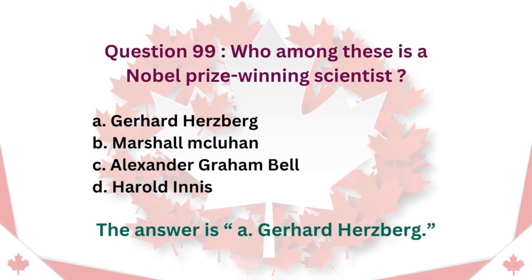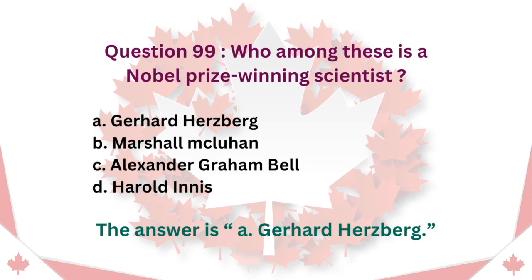Question 99: Who among these is a Nobel Prize-winning scientist? A. Gerhard Herzberg. B. Marshall McLuhan. C. Alexander Graham Bell. D. Harold Innes. The answer is A. Gerhard Herzberg.